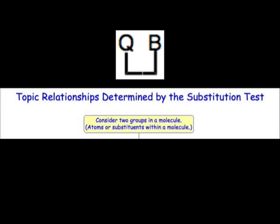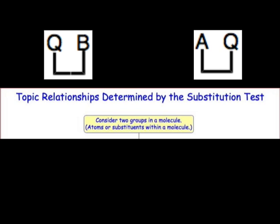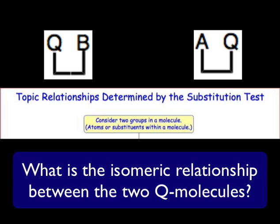Once we've generated the first structure, we then start with the original molecule and replace the second group with the test group Q. At the end of this process, we have a pair of structures, each with one Q in it. The next thing we do is decide how those new structures — those new isomers — are related to one another.